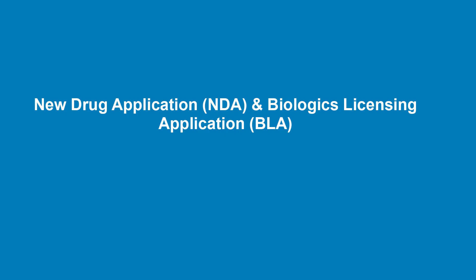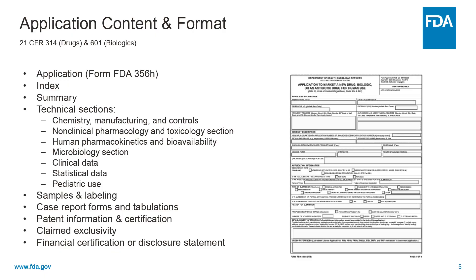When an applicant wants to introduce a new drug or biological product into interstate commerce, they must submit an application, which we refer to as NDAs and BLAs. An application to the FDA must contain adequate information for a substantive review. That includes administrative information, such as the applicant's contact information, which is submitted on Form FDA 356H. That form must accompany every drug or biological licensing submission, whether it's a new application or not.